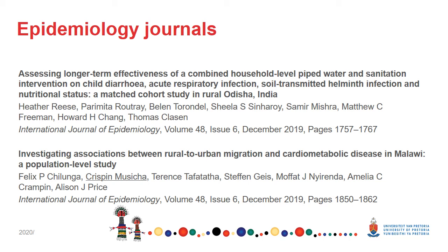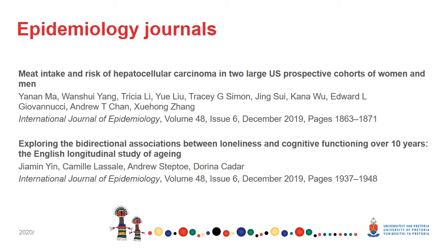The second one: investigating associations between rural to urban migration and cardiometabolic diseases in Malawi — a population level study. The third one: meat intake and risk of hepatocellular carcinoma in two large U.S. prospective cohorts of women and men. The fourth one: exploring the bi-directional associations between loneliness and cognitive functioning over 10 years — the English longitudinal study of aging. It is easy to see the breadth and depth of public health just by looking at these four titles.